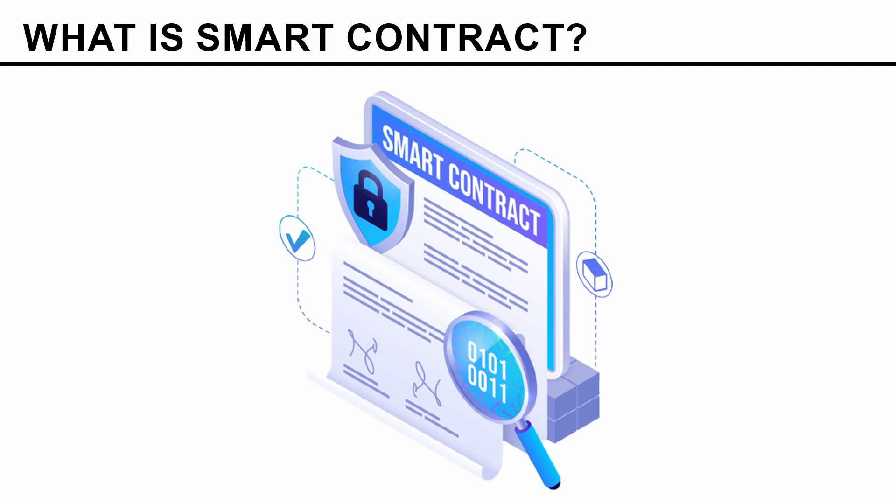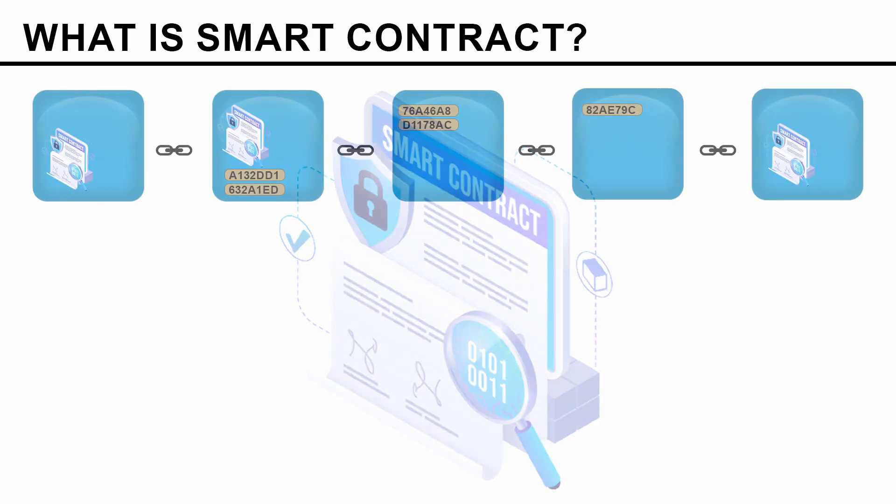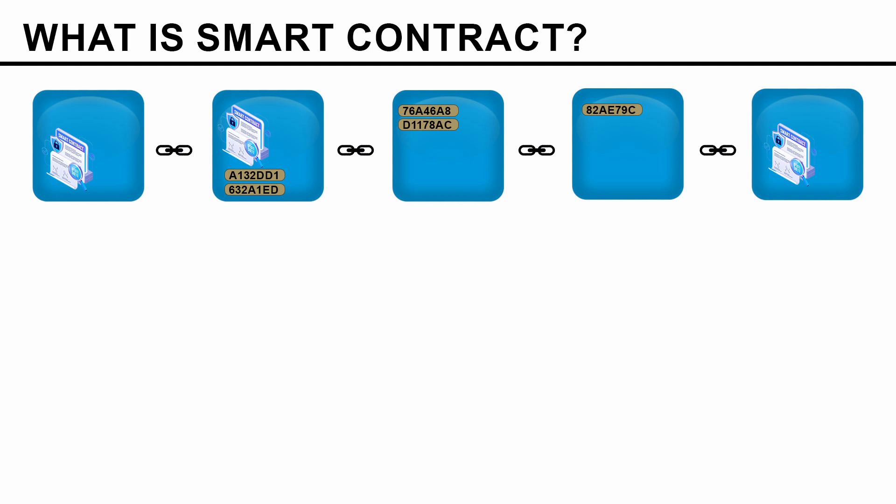So smart contracts are actually code that can go on the blockchain. We haven't talked about code in the blockchain before. We have talked about data in the blockchain, transactions in the blockchain, but code in the blockchain? It sounds very interesting. How can you run code on the blockchain?